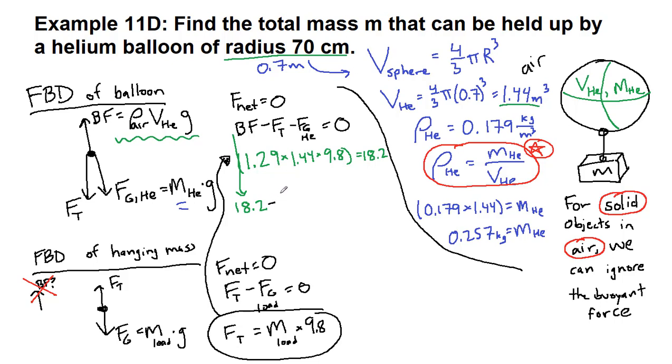And then for the tension, we have minus 9.8 times the mass that we're looking for. I'm going to stop writing the word load, but it's the mass that we're able to hold up. And then for the gravity of helium, we have the mass over here, 0.257, and then times 9.8. And all of this is equal to 0.